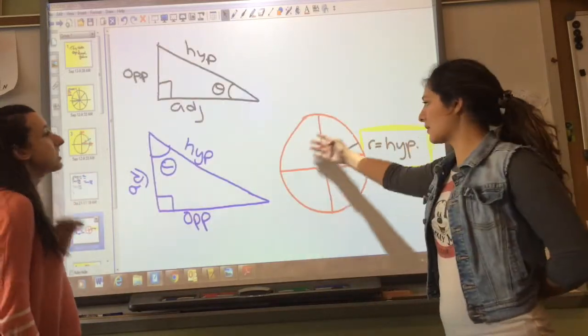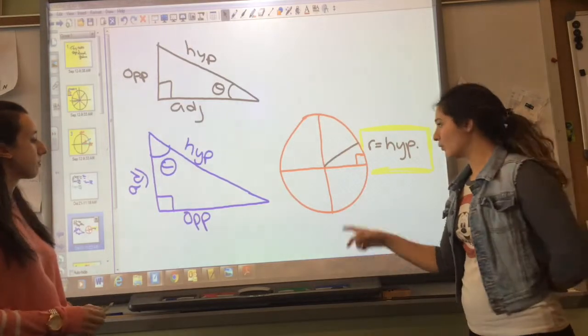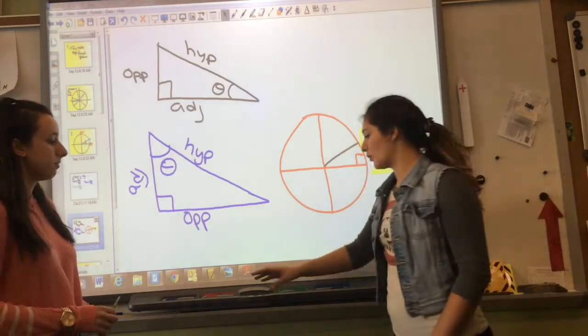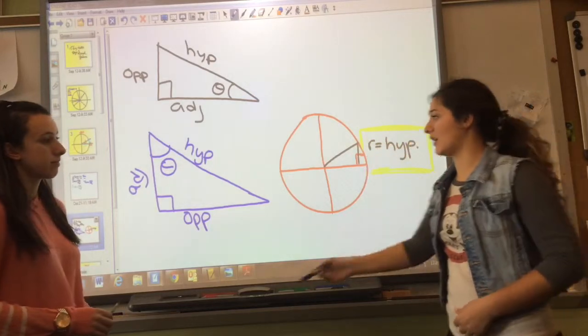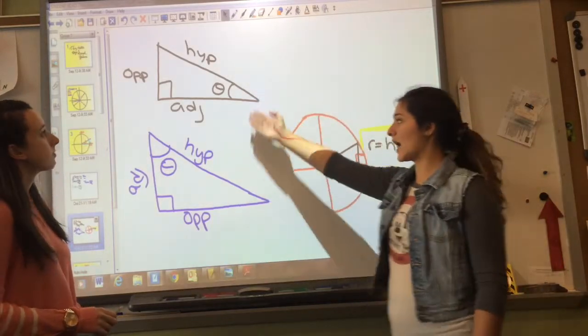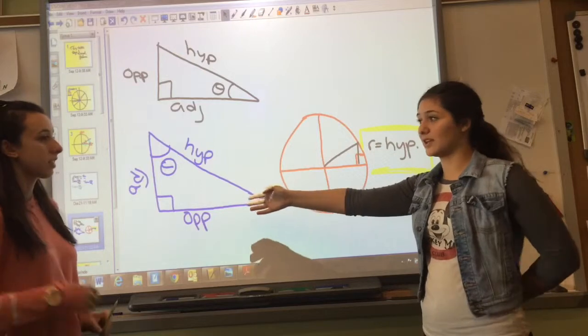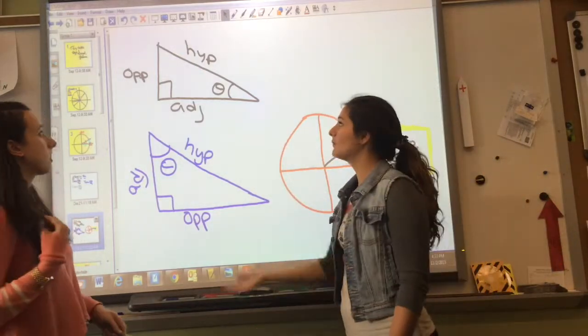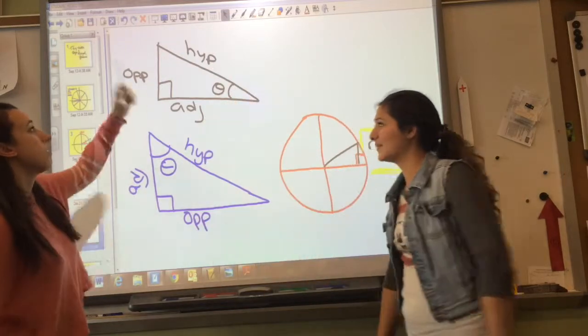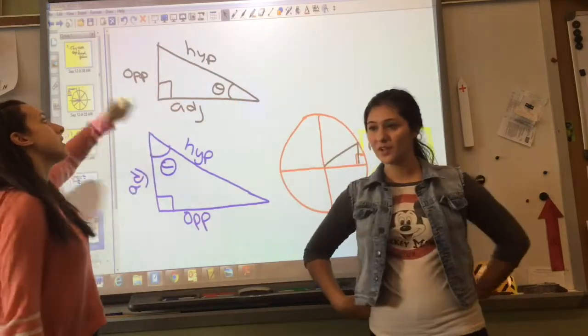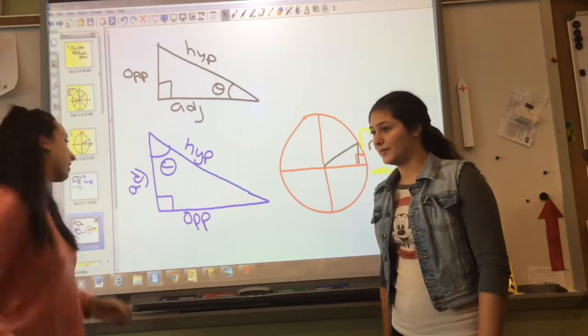So anywhere within our unit circle, we can make triangles when we come to a point out on the circle. So we make triangles, and with those, we can use our SOHCAHTOA to find what the angle is or what the sides are. Because you always have your hypotenuse, your adjacent, and your opposite.